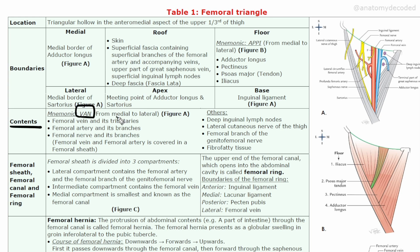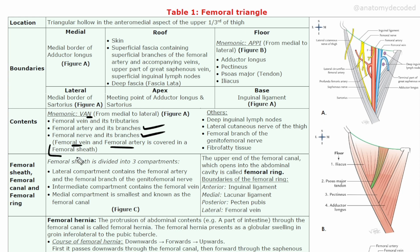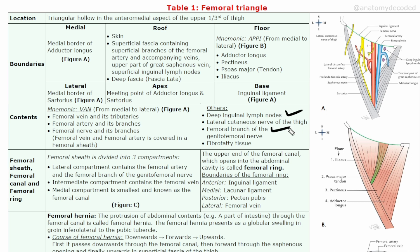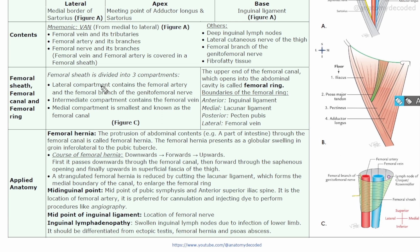The contents of the femoral triangle are remembered by the mnemonic VAN, from medial to lateral. V stands for the femoral vein along with its tributaries, A is for the femoral artery and its branches, and N is for the femoral nerve and its branches. The femoral vein and femoral artery are covered in a sheath referred to as the femoral sheath. Additional contents include deep inguinal lymph nodes, the lateral cutaneous nerve of the thigh, the femoral branch of the genitofemoral nerve, and some fibro-fatty tissue.